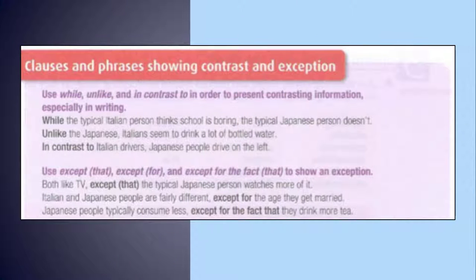Clauses and phrases show contrast and exception. Use while, unlike, and in contrast to in order to present contrasting information, especially in writing. While the typical Italian person thinks school is boring, the typical Japanese person doesn't. Unlike the Japanese, Italians seem to drink a lot of bottled water. In contrast to Italian drivers, Japanese people drive on the left.